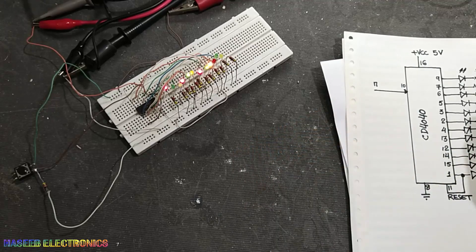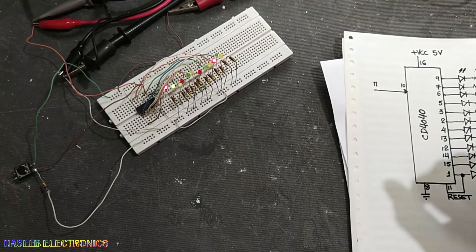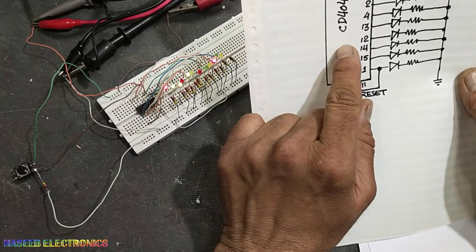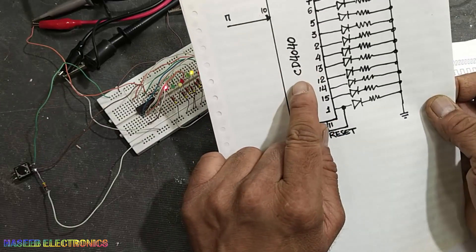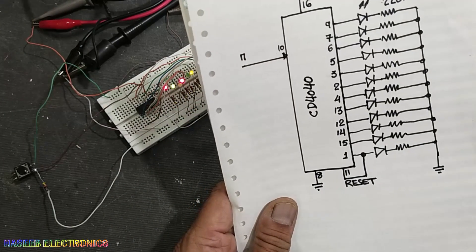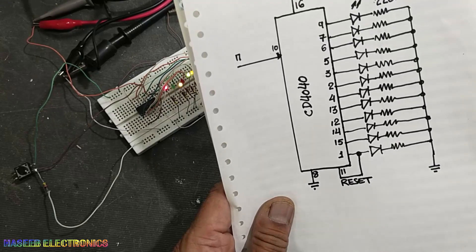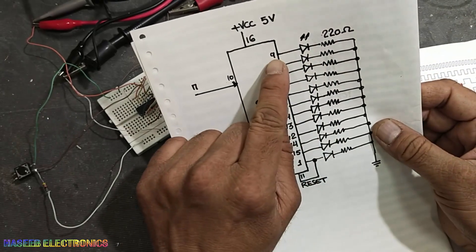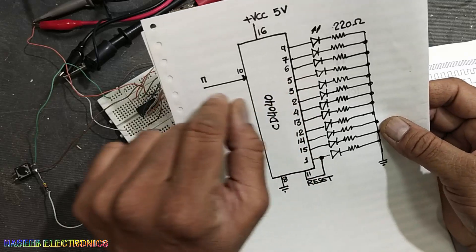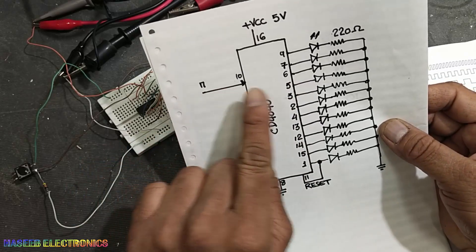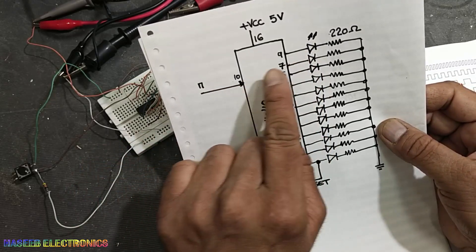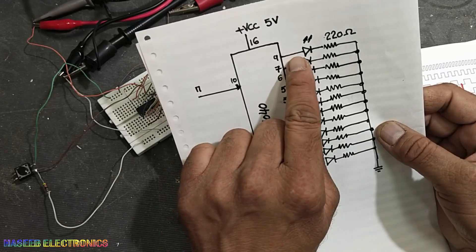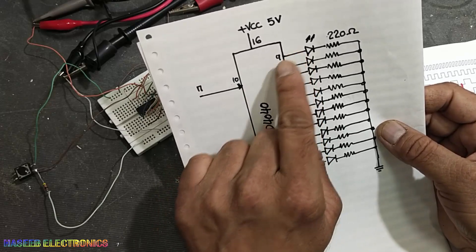Assalamualaikum warahmatullahi wabarakatuh friends, in this video we will see this 12-stage binary counter, the CD4040 IC. It is a CMOS IC, a ripple counter, and each stage works as a master-slave. The first input will give output at pin number 9 and it will be divided by two.